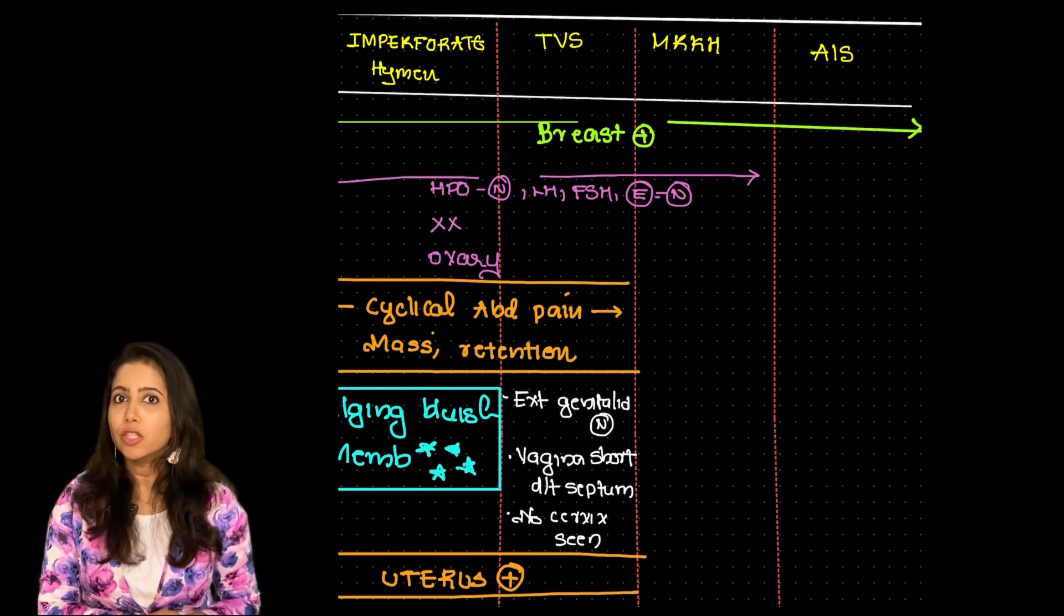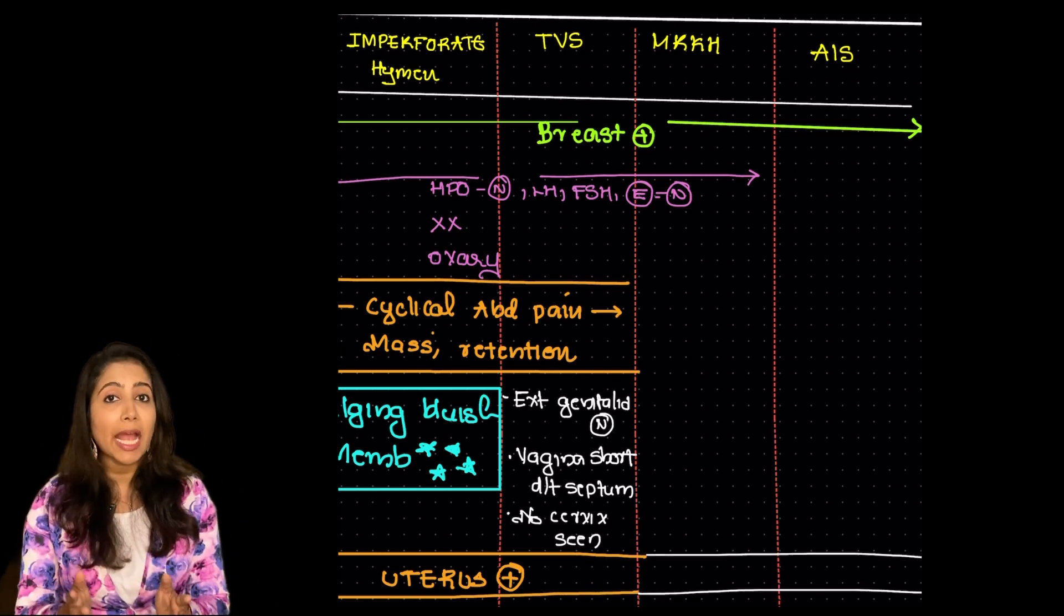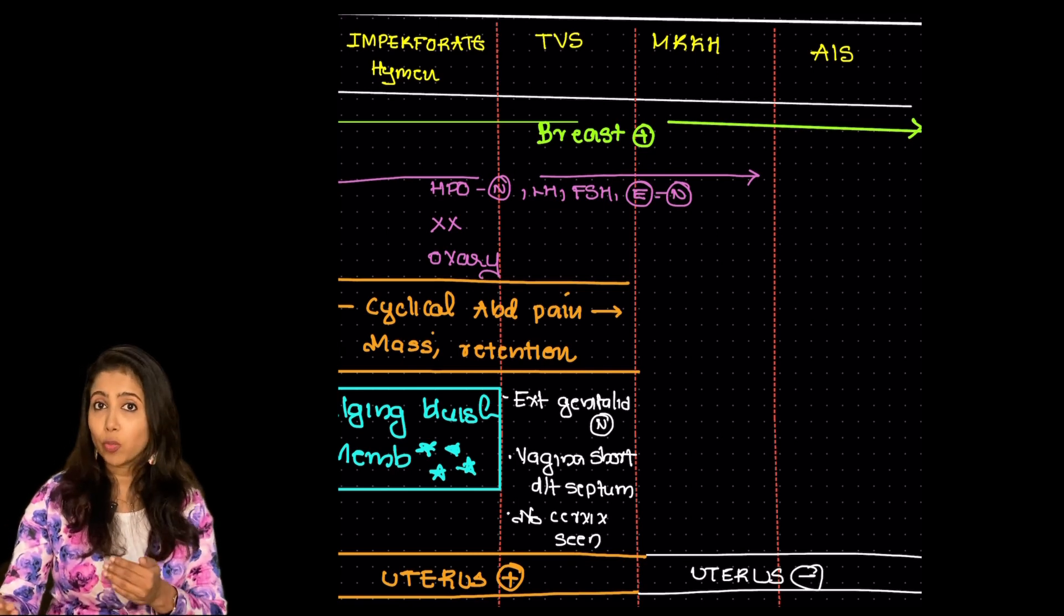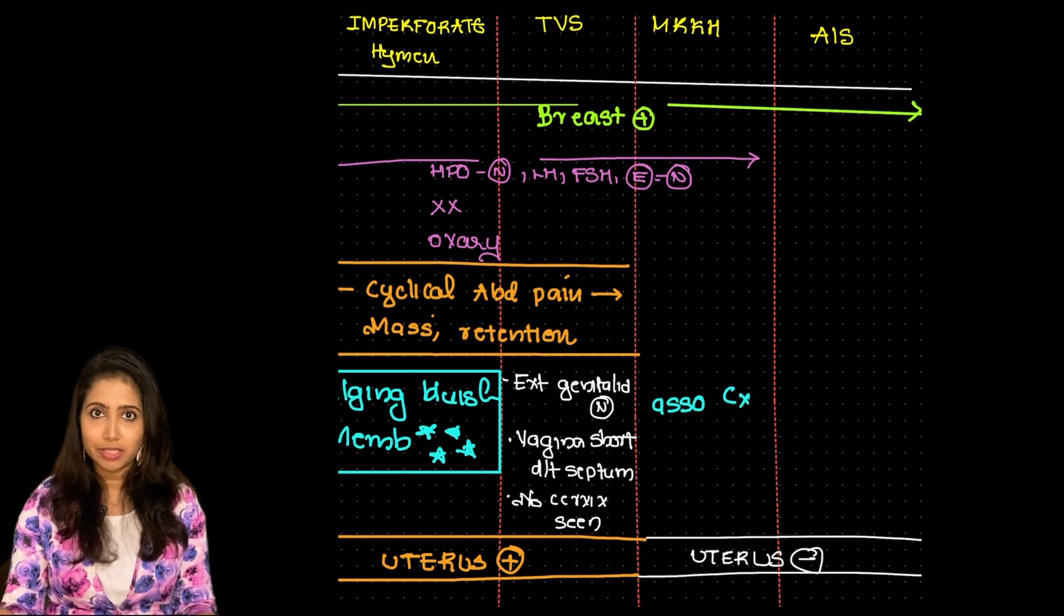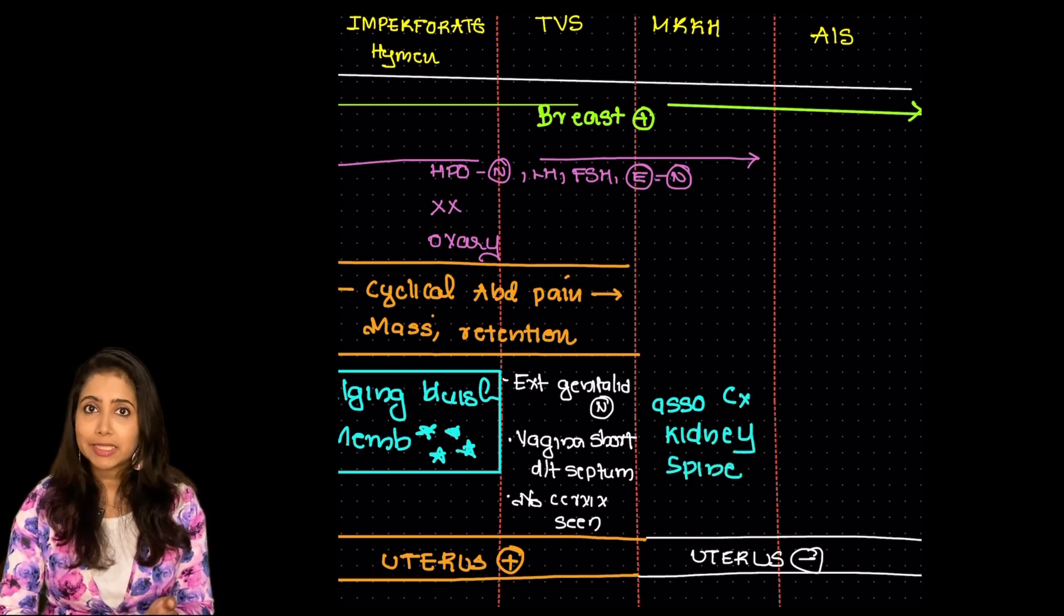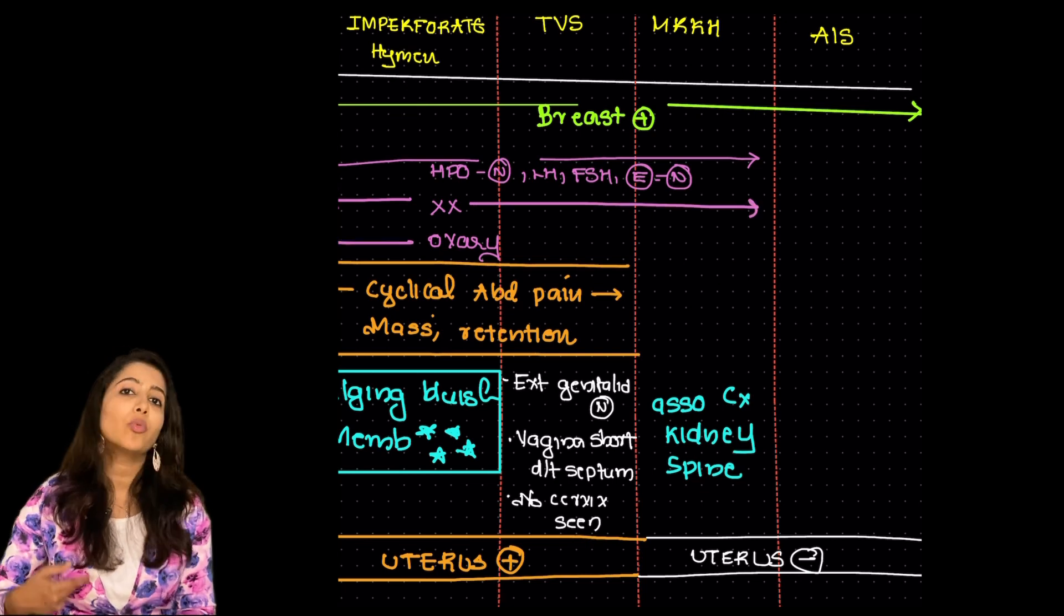What happens in MRKH? So in MRKH the uterus as such is absent. So on PR examination or while we do an ultrasound the uterus is absent. Other than that all the features are similar that is the karyotype is XX the hormone levels are normal the ovaries are present.